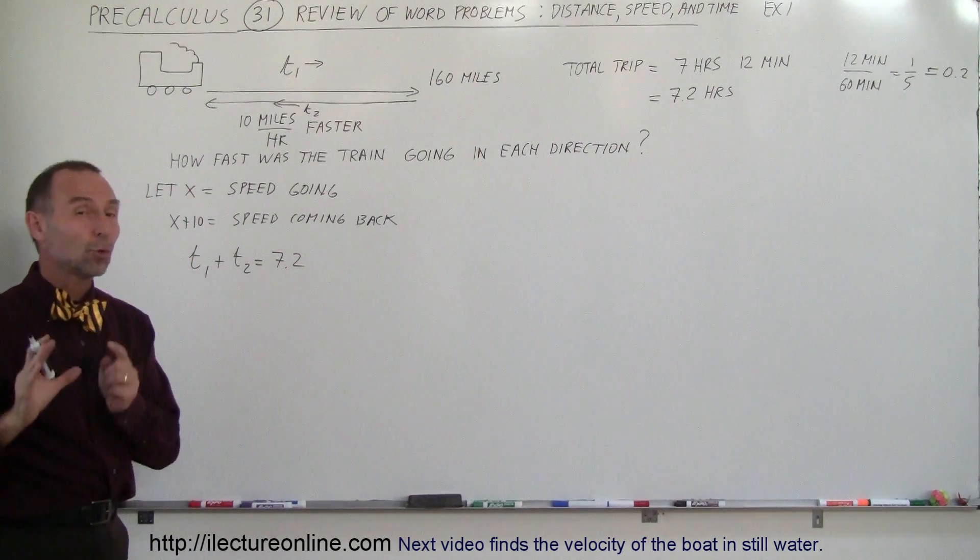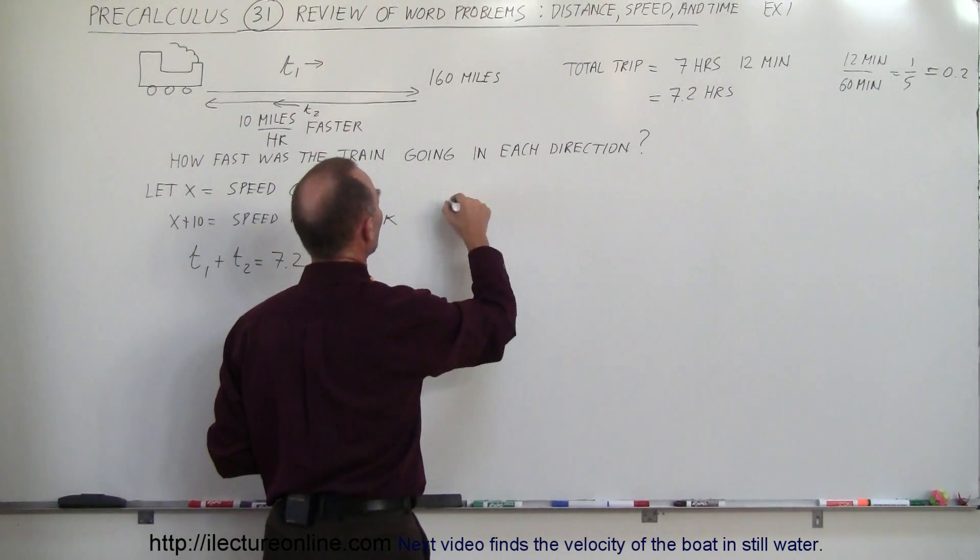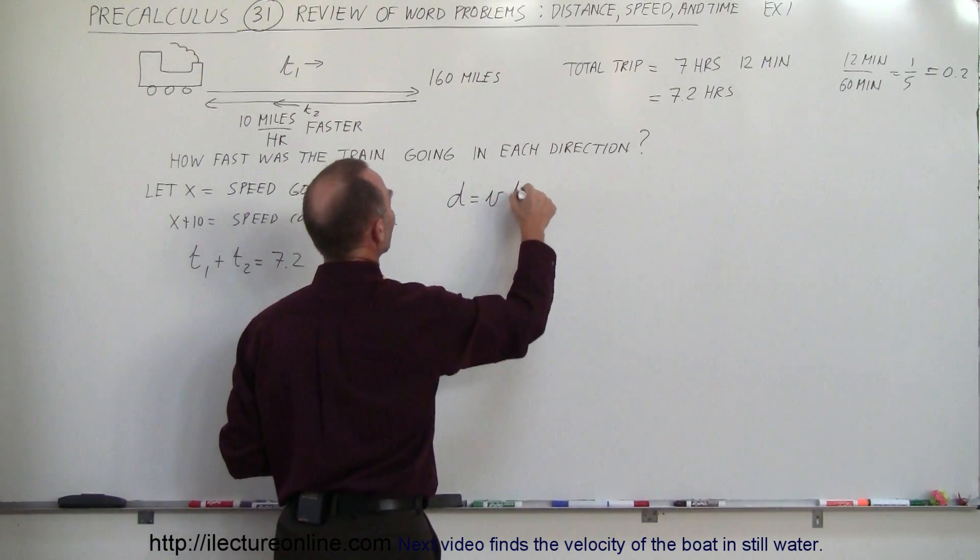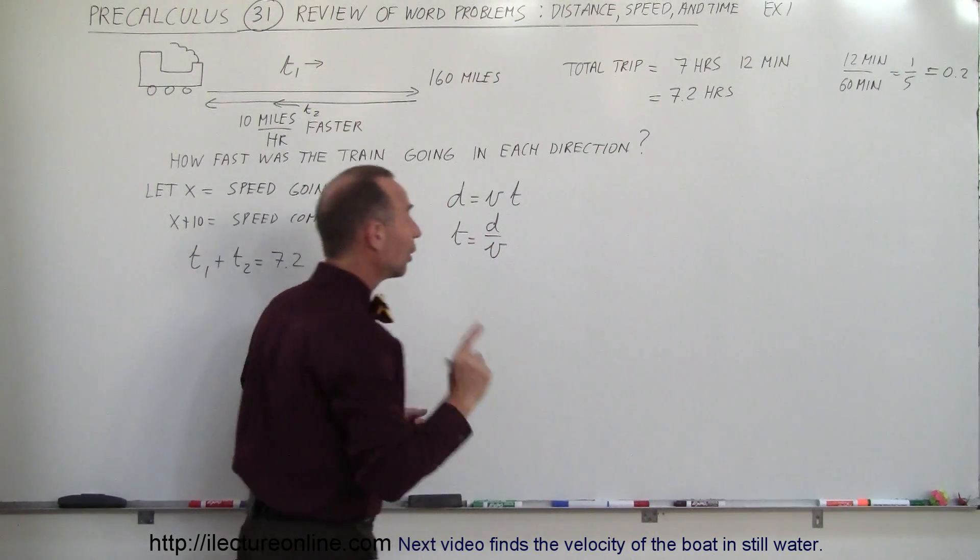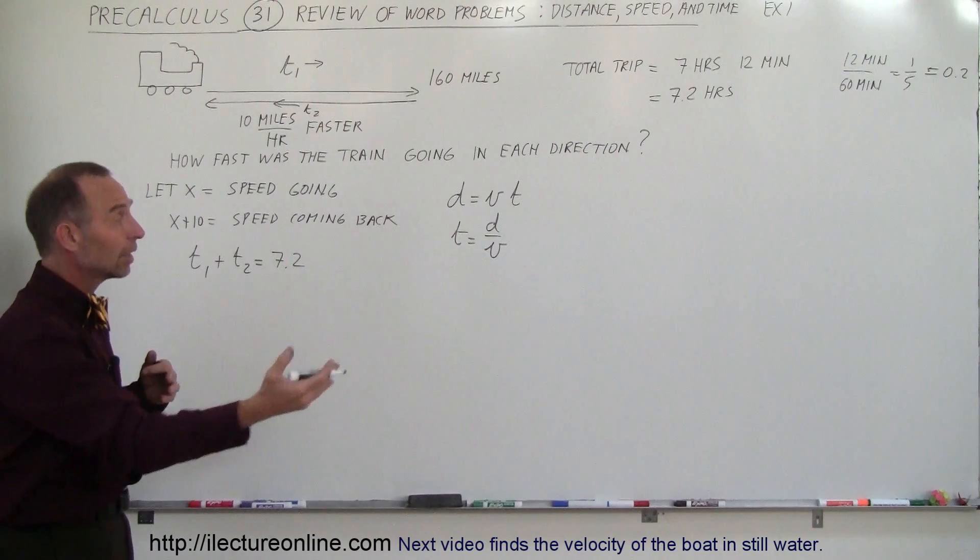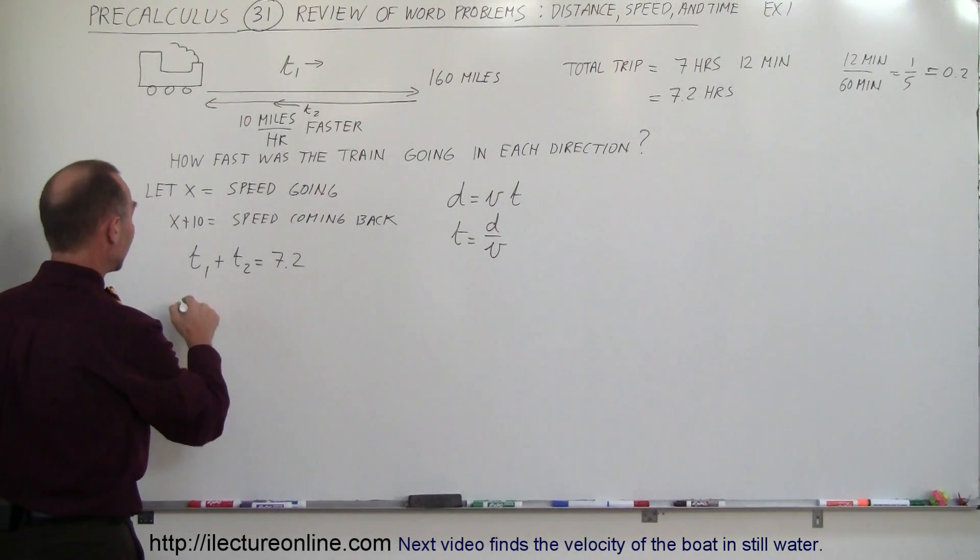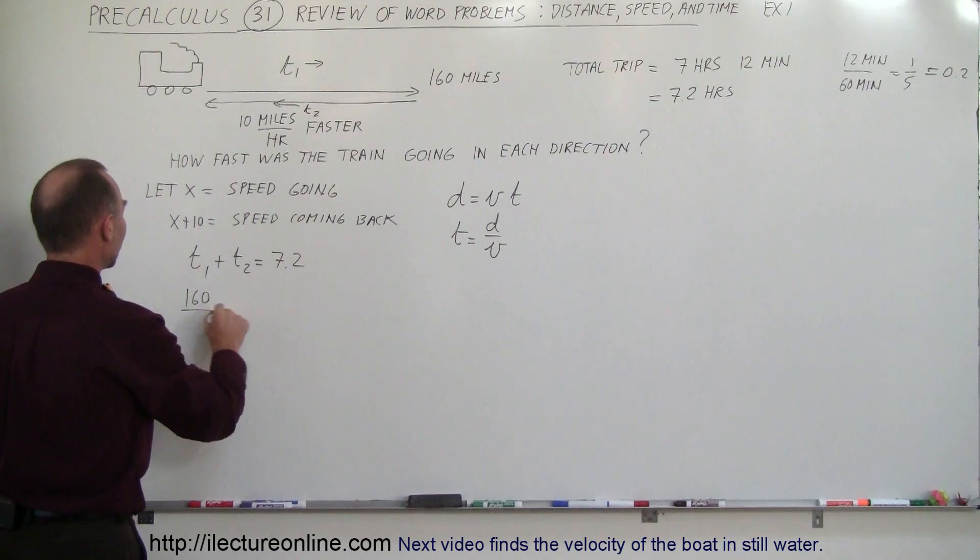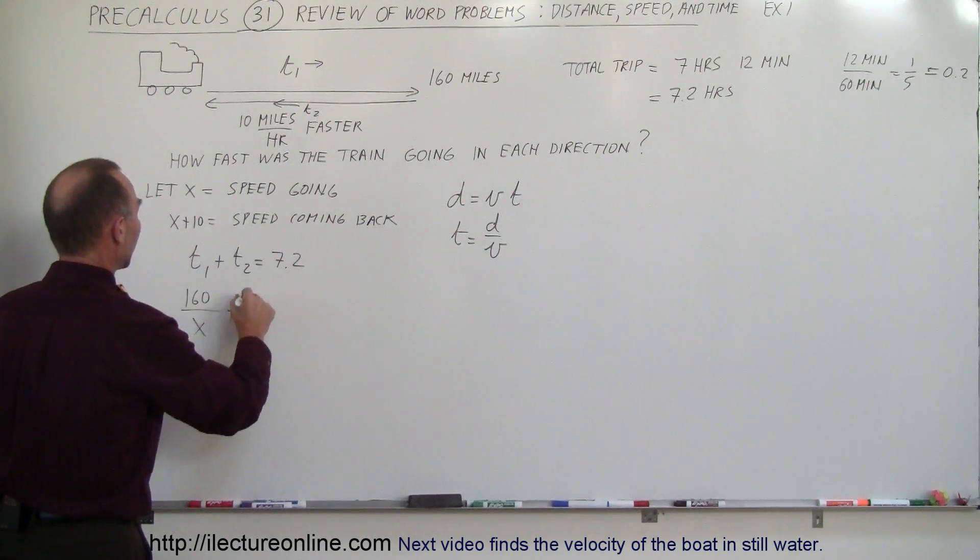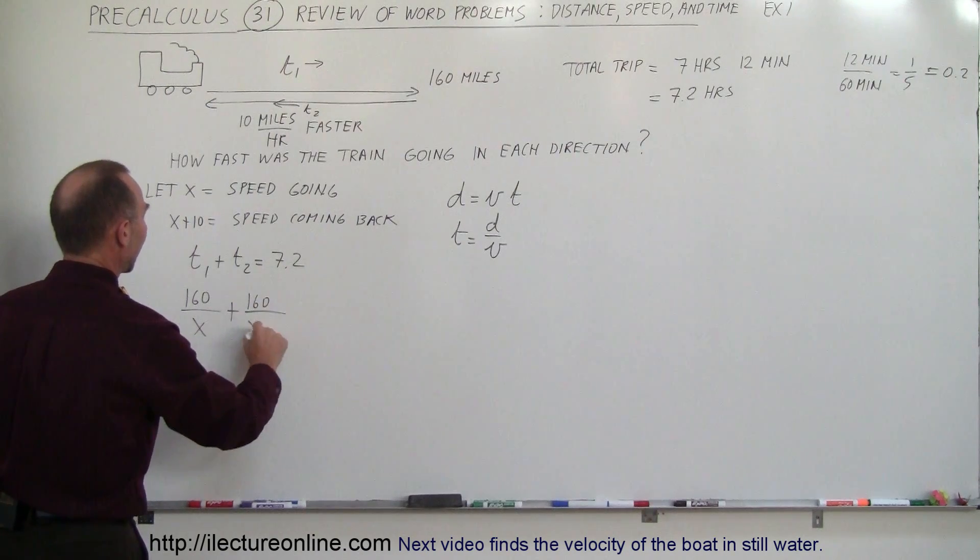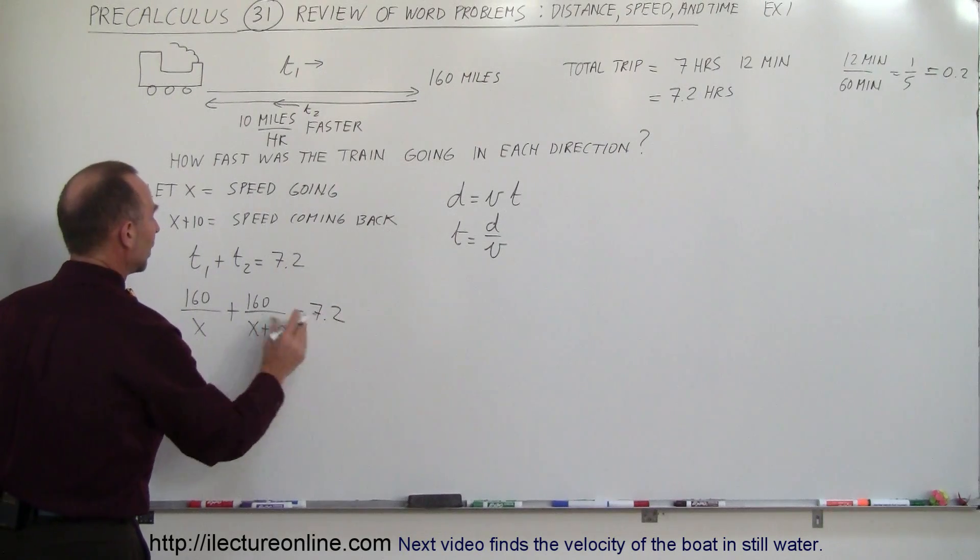And of course we have the equation that relates distance, velocity, and time. Distance equals velocity times time. Therefore time equals distance divided by the velocity. Since we know the distance going and coming back is 160 miles, we can write this equation as 160 divided by x, which is the speed going, plus 160 divided by x plus 10, which is the speed coming back, must add up to 7.2.